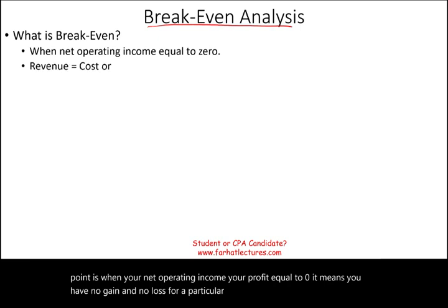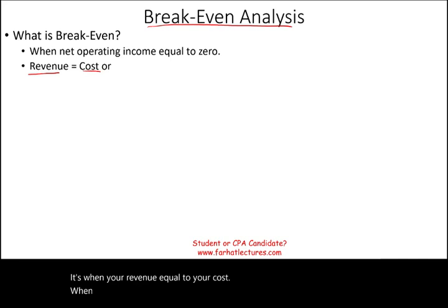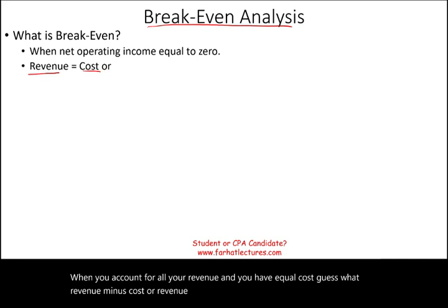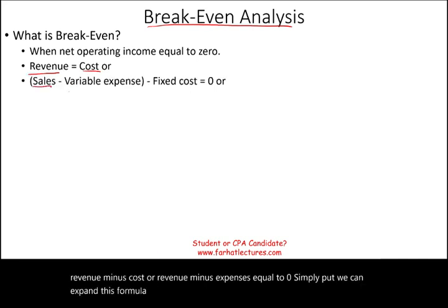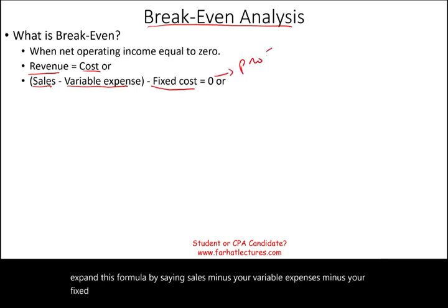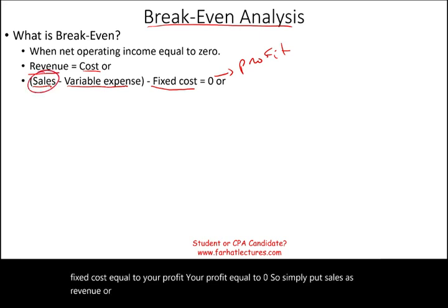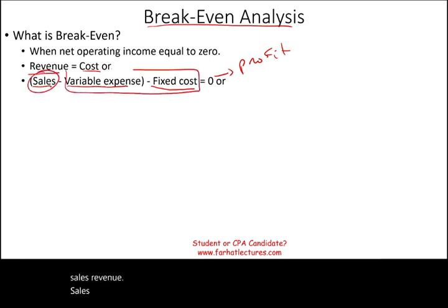When would that happen? It's when your revenue equals your cost. When you account for all your revenue and you have equal cost, revenue minus cost — or revenue minus expenses — equals zero. Simply put, sales minus variable expenses minus fixed cost equals your profit, and at break-even, your profit equals zero. Sales is your revenue, and when those two equal each other, you have a profit of zero.